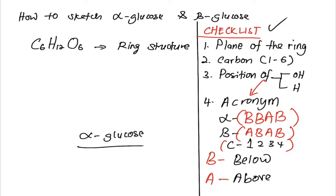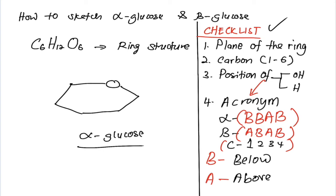Step number one, we will sketch the plane of the ring. Step number two, we will indicate carbon number one to number six.